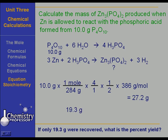We have 19.3 grams that we retrieved. We should have retrieved, theoretically, 27.2 grams. Multiply that by 100, and we see that we have a 71 percent yield.